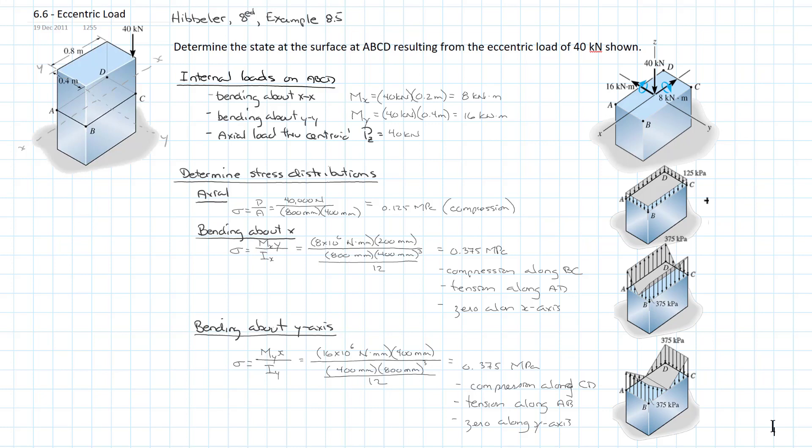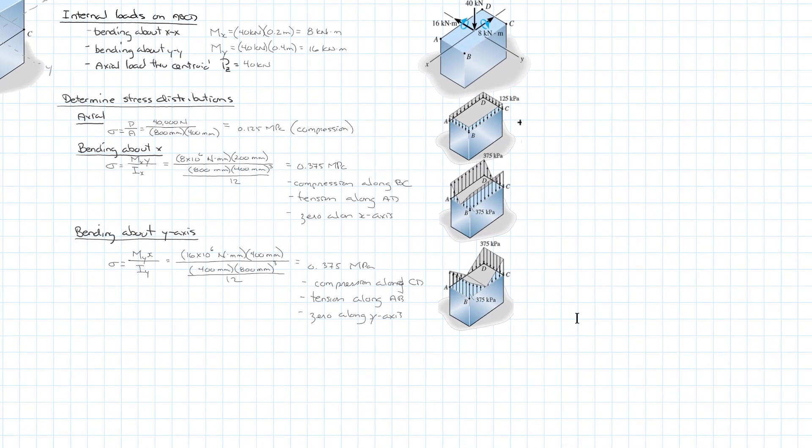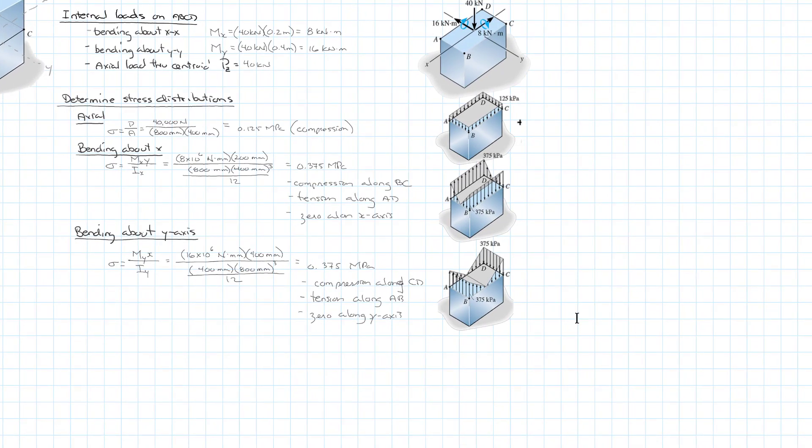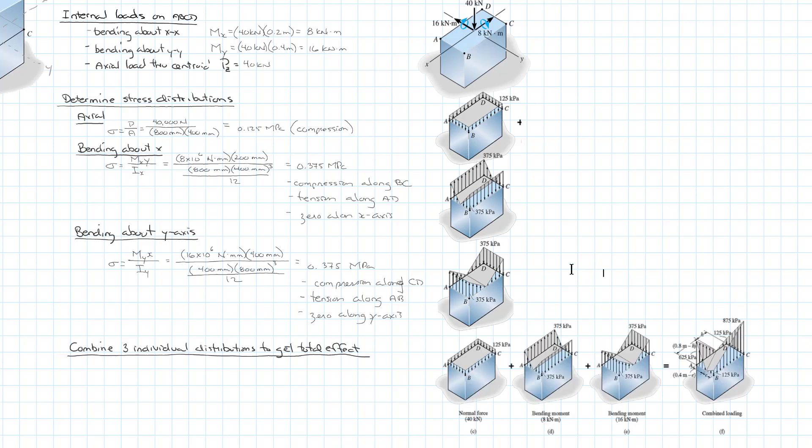And so that's really all of the impacts. And so if we want to know what the actual stress distribution would look like along that plane, which is what the question asks, all we have to do is add them all together. And so I'm just going to label our last little bit - combine three individual distributions to get total effect. And so basically you can look at key points and do some math and then draw your nice diagram. And once again, the textbook does a really nice job of capturing that graphically. And we can see how they all add together.